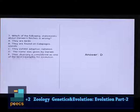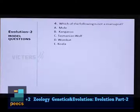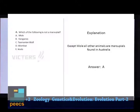Question 4: Which of the following is not a marsupial? (A) Mole, (B) Kangaroo, (C) Tasmanian Wolf, (D) Wombat, (E) Koala. Except for mole, all other animals are marsupials found in Australia. The correct answer is A.